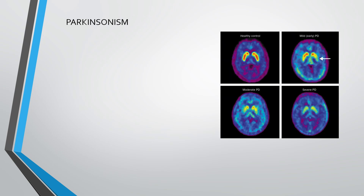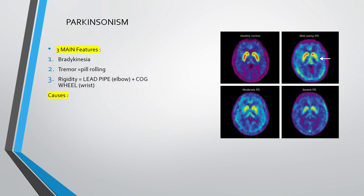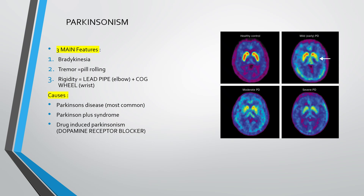Here we can see pictures of a healthy control and a person with mild, moderate, and severe Parkinson's disease. The three main features are bradykinesia, tremor, and rigidity. Causes of Parkinsonism include Parkinson's disease — the most common cause — Parkinson's plus syndrome, drug-induced Parkinsonism based mainly on dopamine receptor blockers, and Wilson's disease.